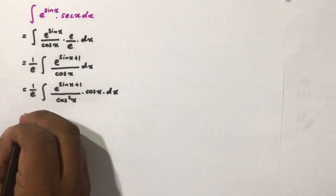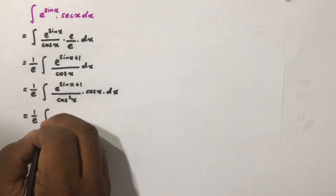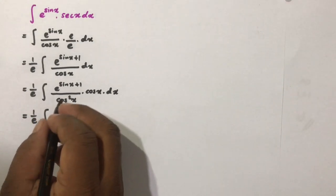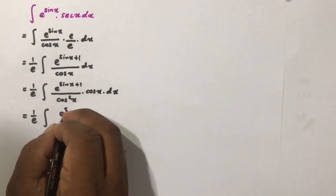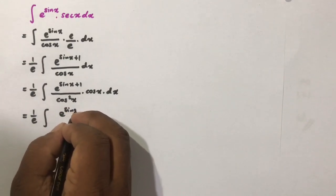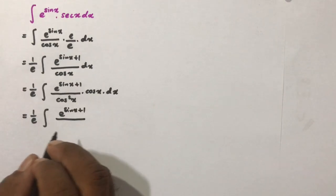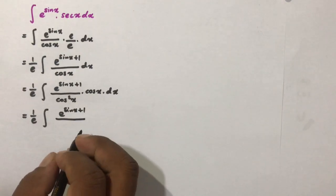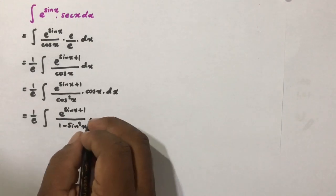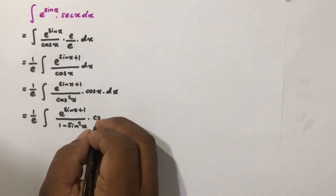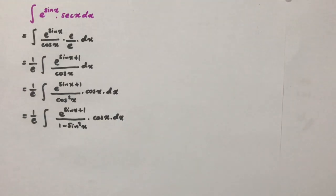Now we have 1 over e times the integral of e to the sine of x plus 1. Instead of cosine squared of x, I am going to write 1 minus sine squared of x, giving e to the sine of x plus 1 over 1 minus sine squared of x times cosine of x dx.